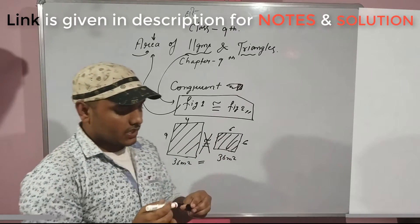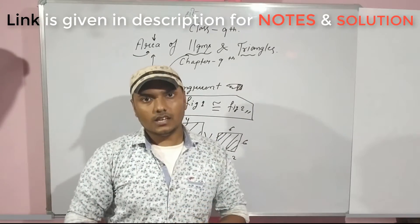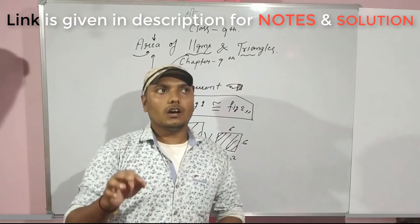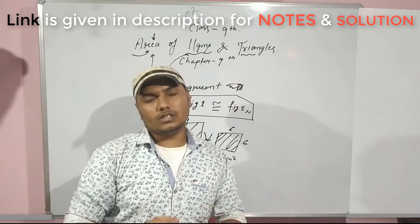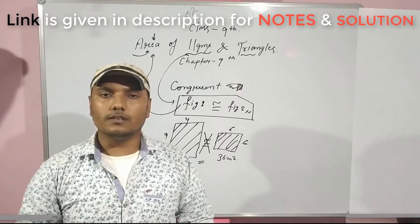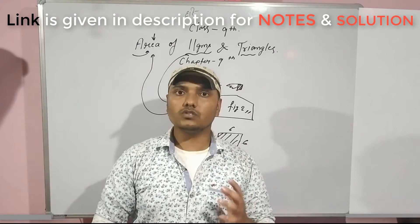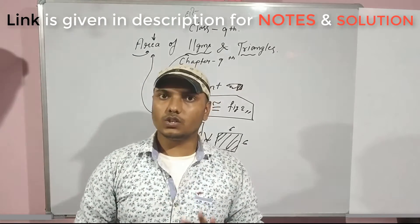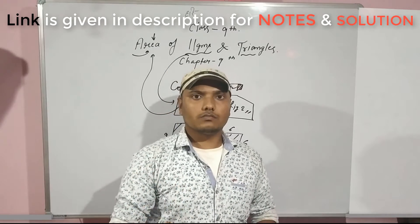In this chapter, if two figures are congruent to each other, they must have equal areas. But the converse of this statement is not true.